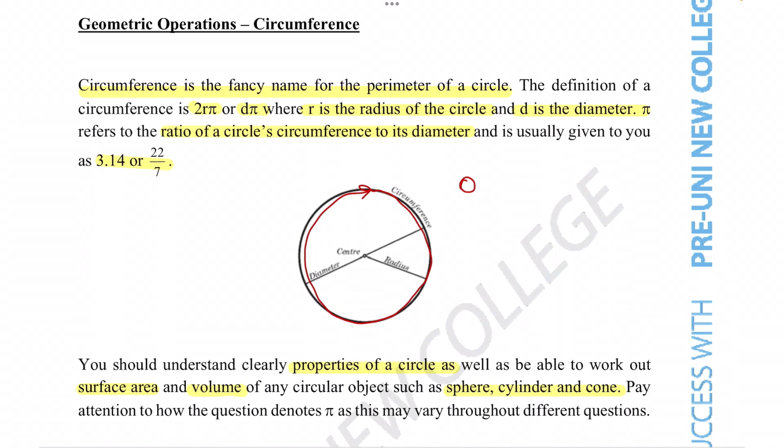So even if the circle was this big or this big, the circumference divided by the diameter always gave us the same number and that number is pi.